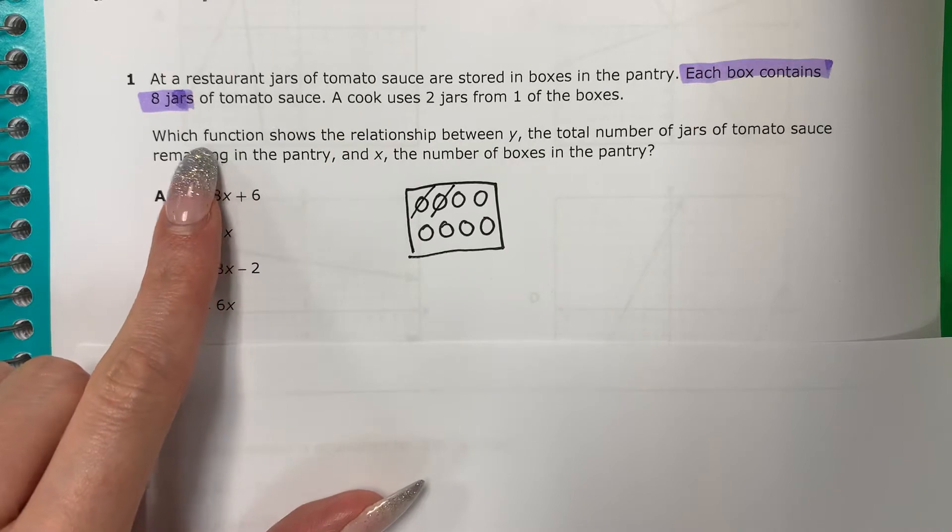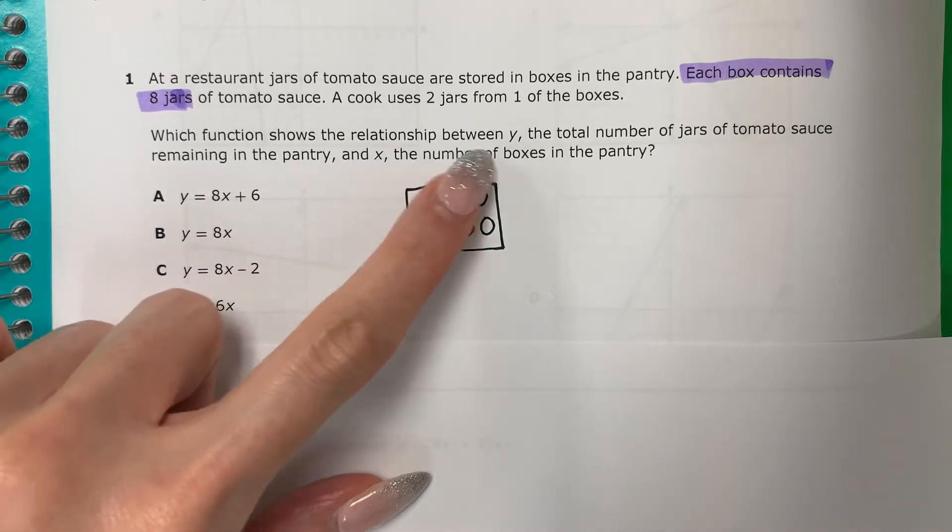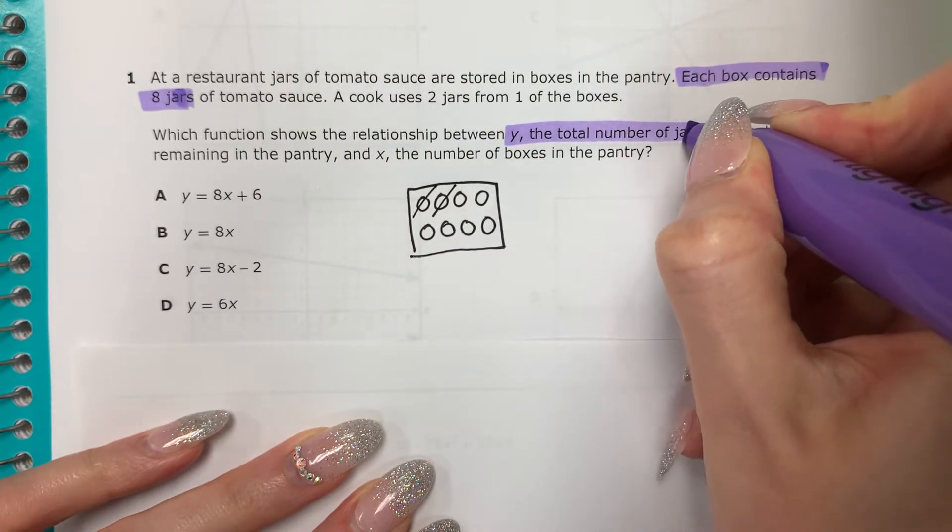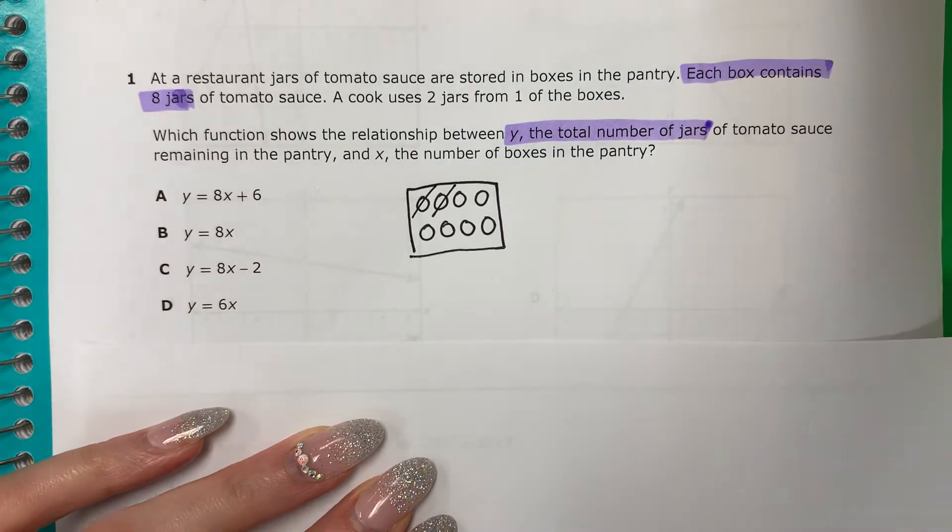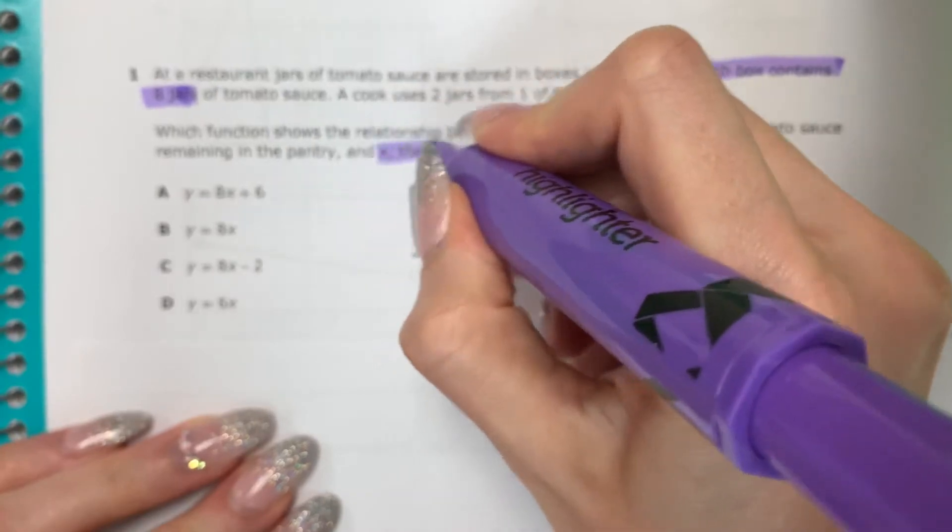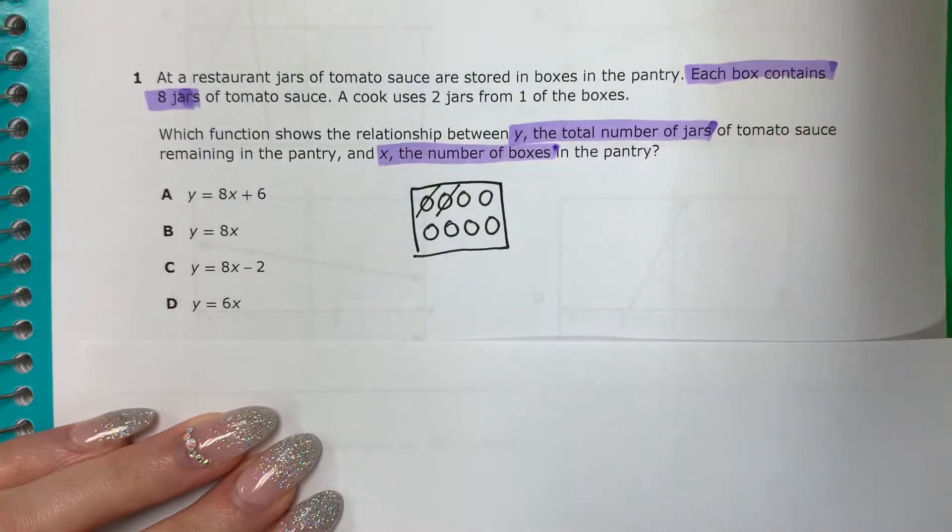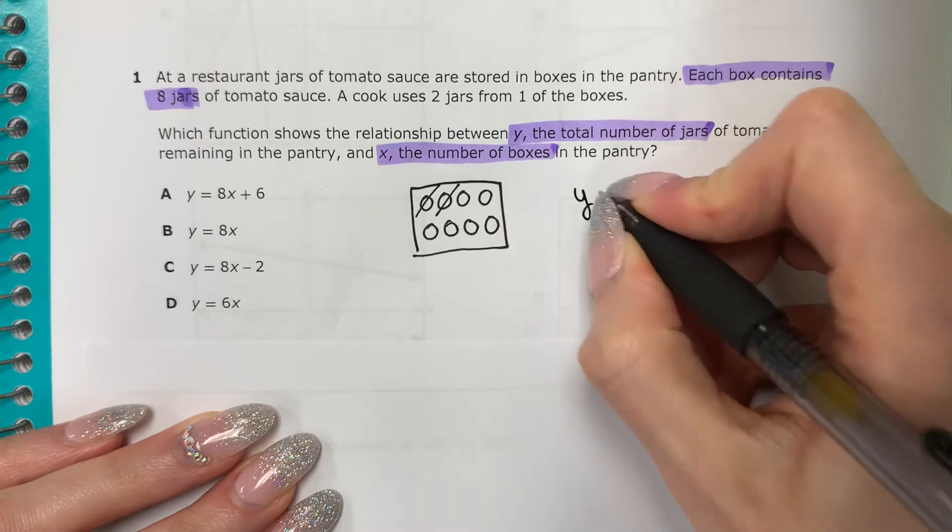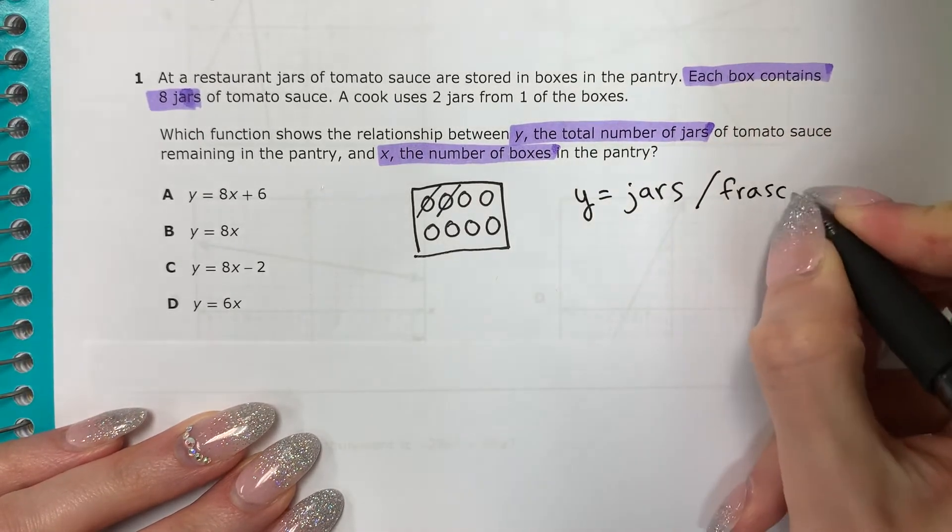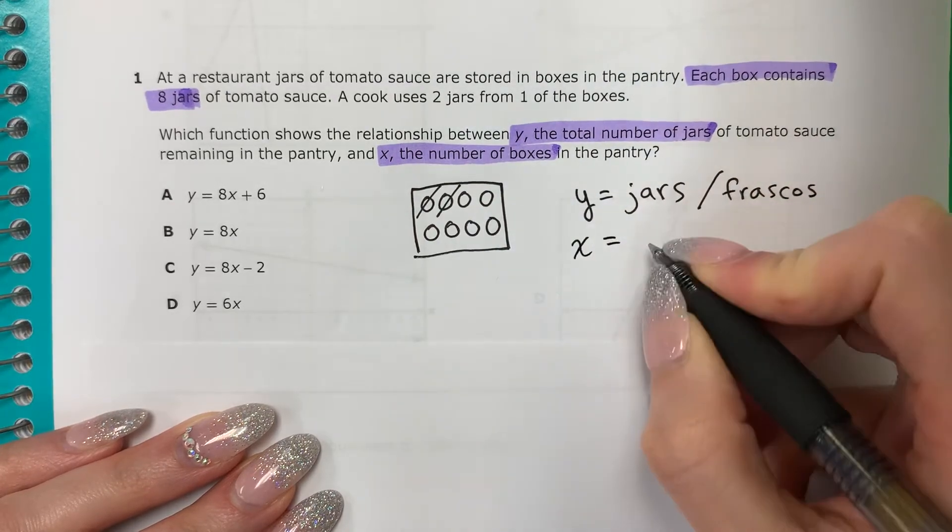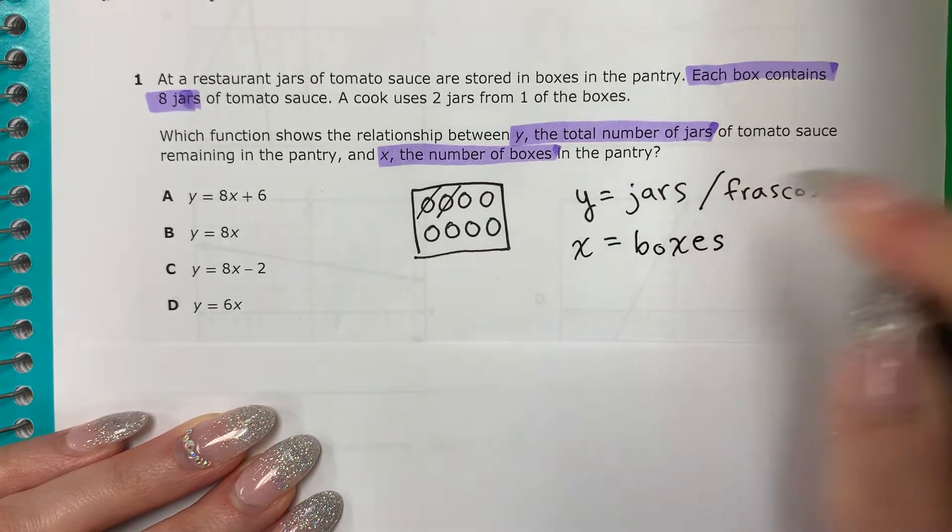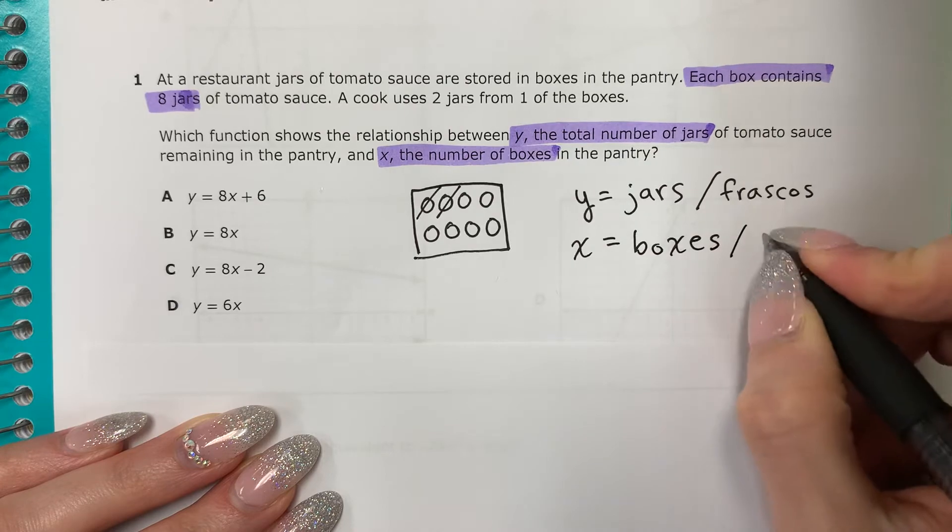I need to determine which function shows the relationship between Y, the number of jars. So Y is the number of jars. Y es el número de frascos. And X, the number of boxes. Y X es el número de las cajas. So I have Y is jars or frascos. And X is boxes, and that's cajas.